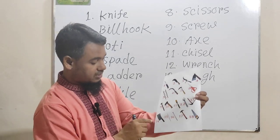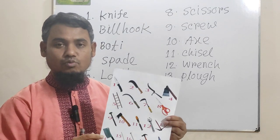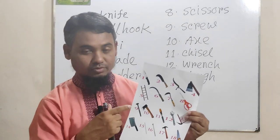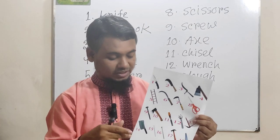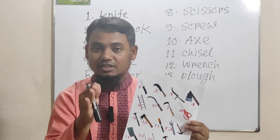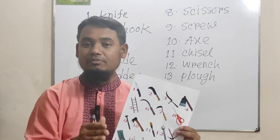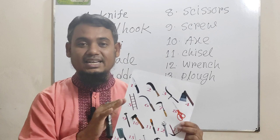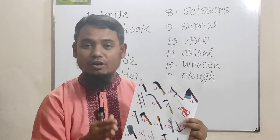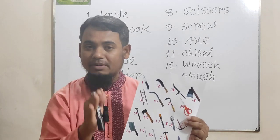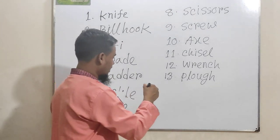Picture number fourteen is cleaver. Cleaver is used to chop meat including beef, mutton, and so on. It is especially used to chop meat. Picture number fourteen is cleaver.